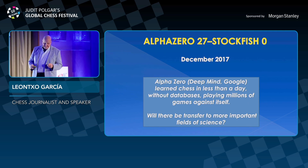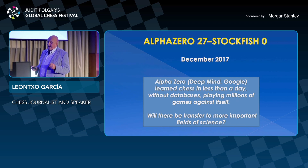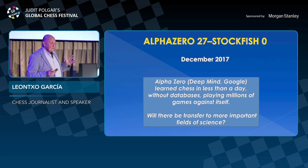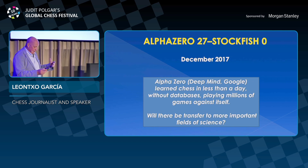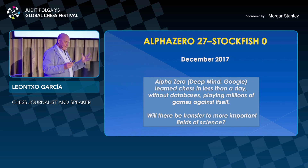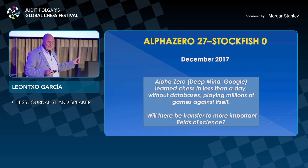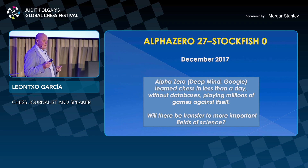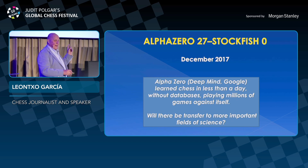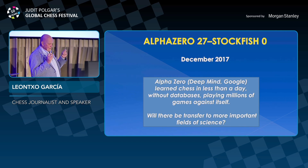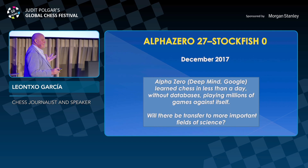That was December 2017. The question at that moment was: for chess, from a technical point of view, this is going to be very important. In fact, the next month — January — Magnus Carlsen changed his style in the Wijk aan Zee tournament in the Netherlands, inspired by AlphaZero. But the big question was: will there be a transfer to more important fields of science, as happened before with Deep Blue?